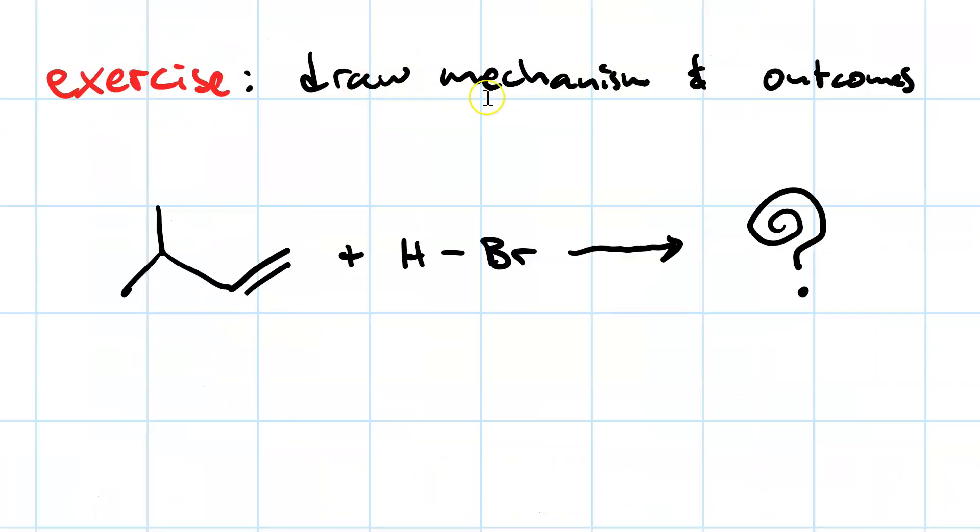Here's an exercise for you. Draw the mechanism and the outcomes for this hydrohalogenation reaction, where we have 3-methyl-but-1-ene reacting with hydrobromic acid.